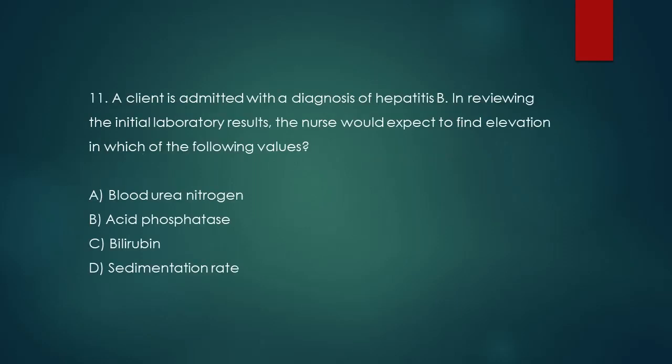Question 11. A client is admitted with a diagnosis of hepatitis B. In reviewing the initial laboratory results, the nurse would expect to find elevation in which of the following values? A. Blood urea nitrogen. B. Acid phosphatase. C. Bilirubin. D. Sedimentation rate.